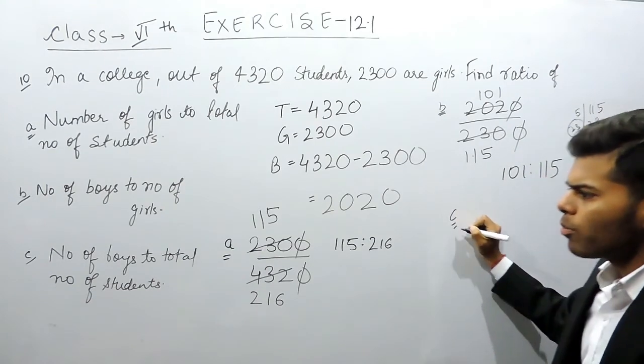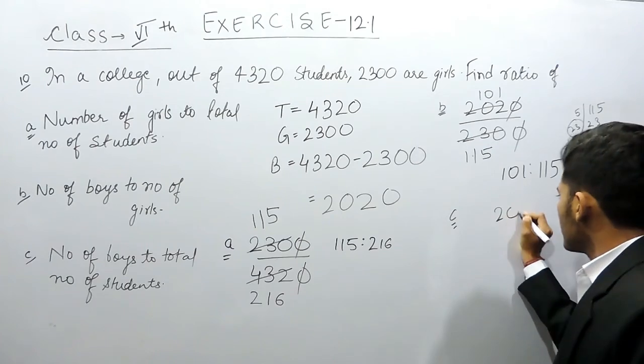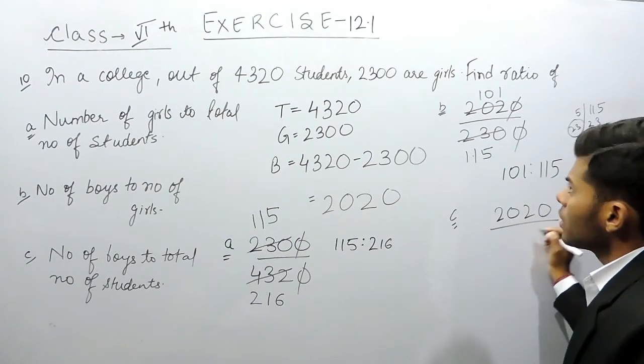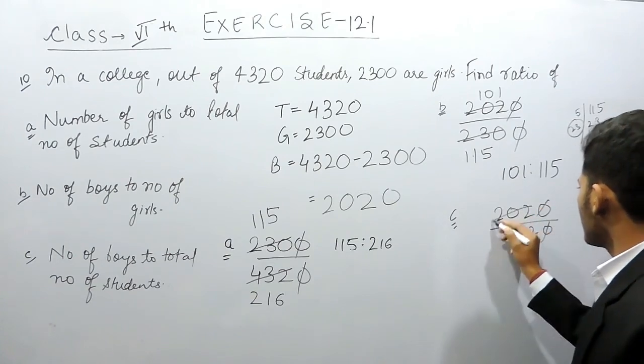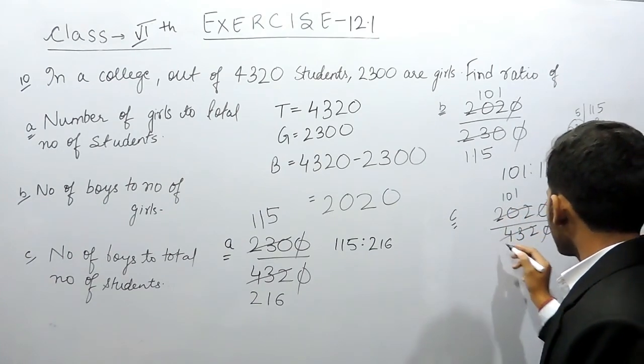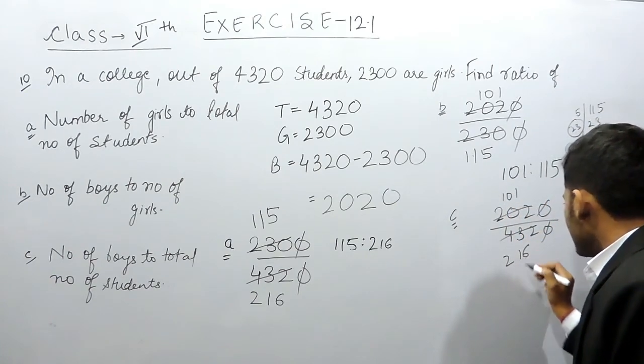And in the last part, number of boys to total number of students. So, 2020 upon 4320, this gets cancelled out, 101 times and this will be 216 times.